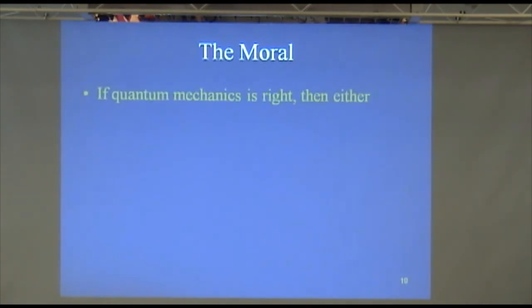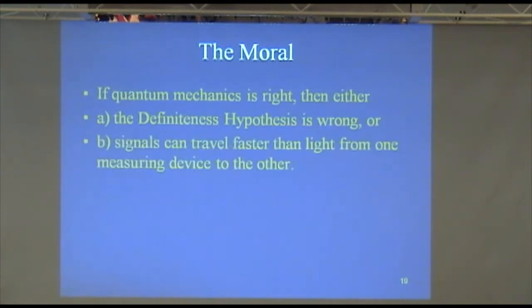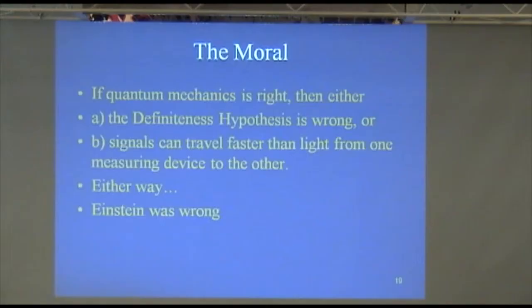So, the moral is that if quantum mechanics is right, then either the definiteness hypothesis is wrong. That's one possibility. Or in any case, another possibility that some people would throw in the mix here is this: maybe there really are signals going faster than light here. Maybe that's the explanation for these correlations. And that's a hypothesis that you shouldn't just dismiss. There are theories around that actually take that seriously. But in either case, Einstein was wrong because Einstein rejected the action at a distance view and he gave an argument that led to the definiteness hypothesis. So, either way, Einstein's view is wrong. Now, this is not to disrespect Einstein. This is just to say that even someone as brilliant as Einstein might be puzzled by some of those subtleties. It was a long time before people figured out how to get at what was going on with this argument.